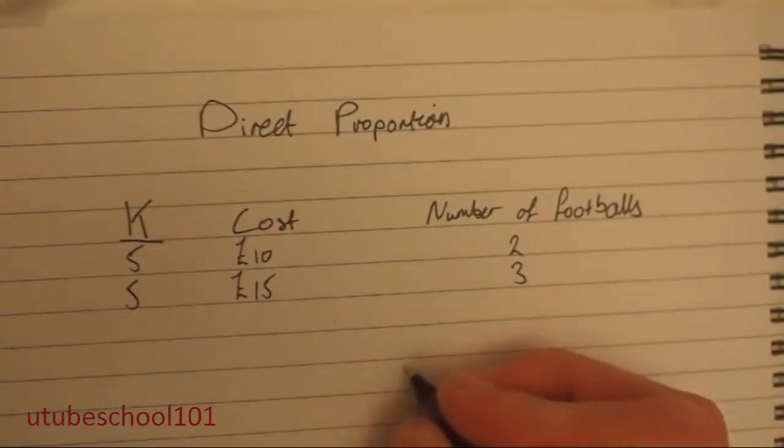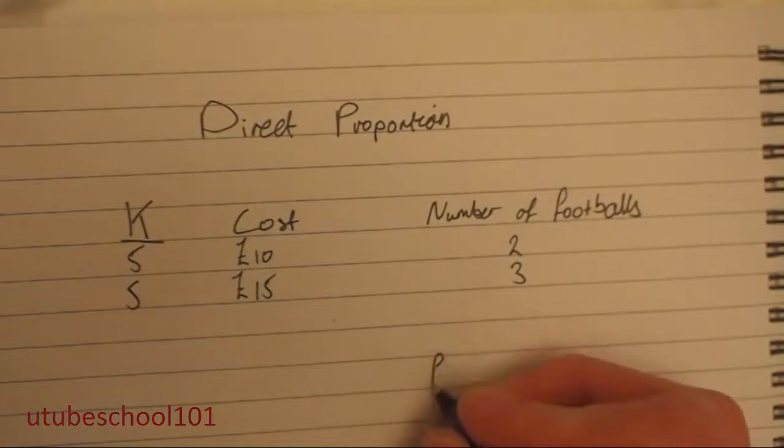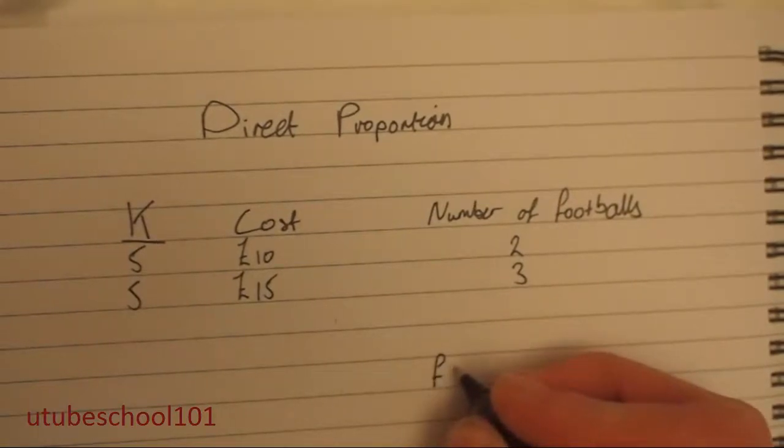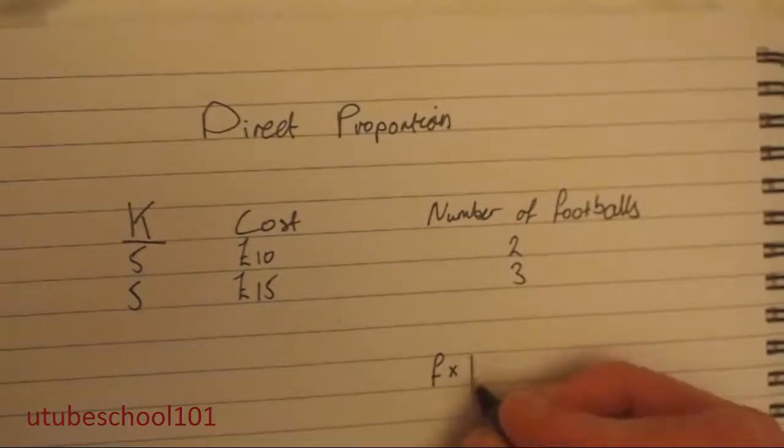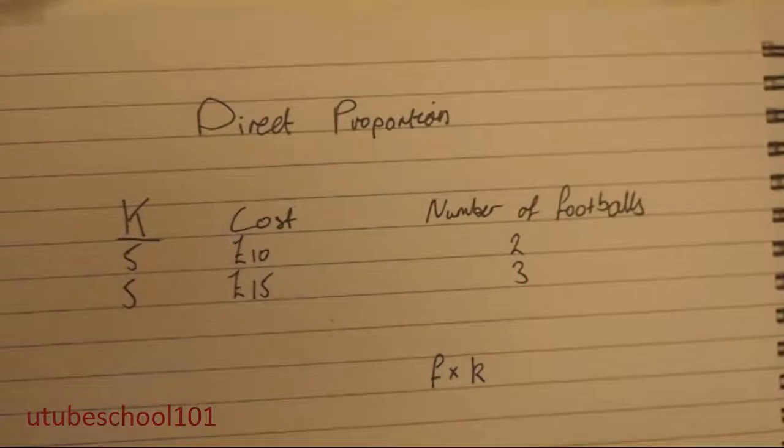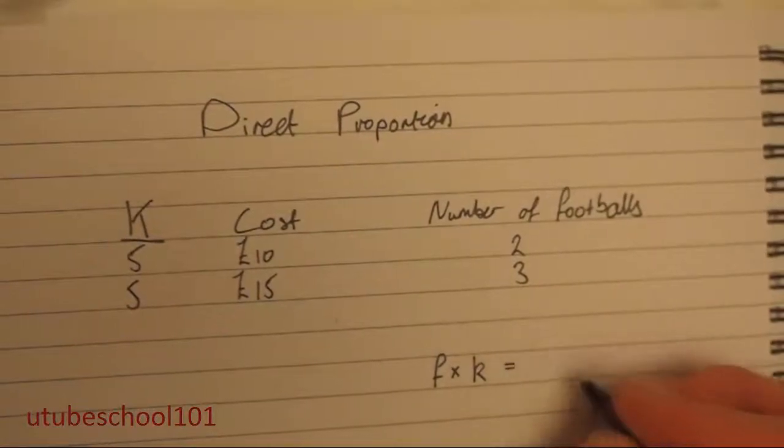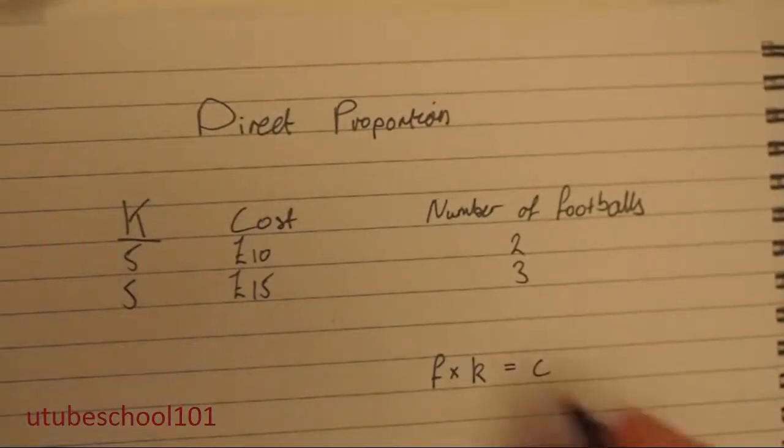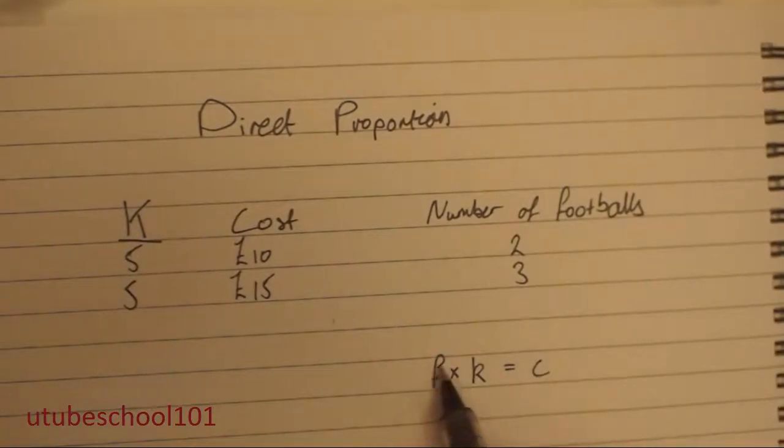So you have the number of footballs, represent that as f. And if you multiply this by the k value, which is the multiply value, you will get the cost that will represent as c. So as the cost increases, it will increase by k.